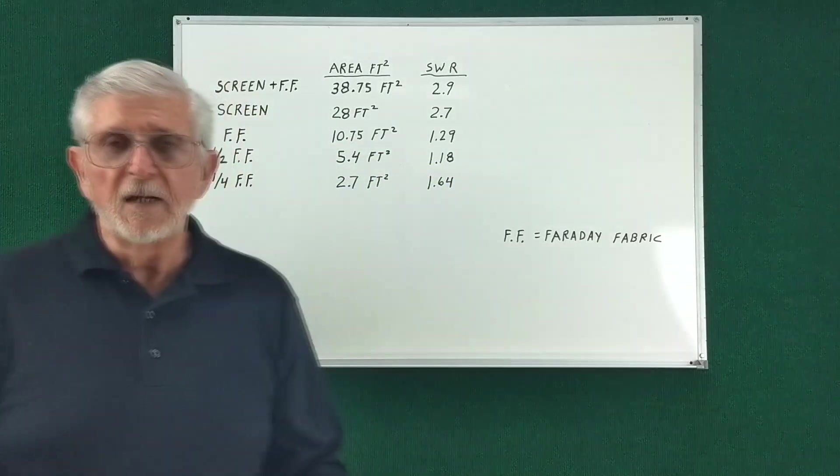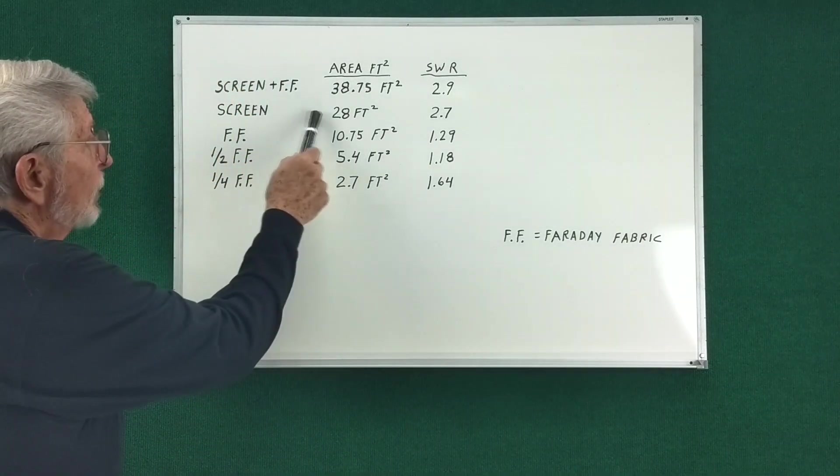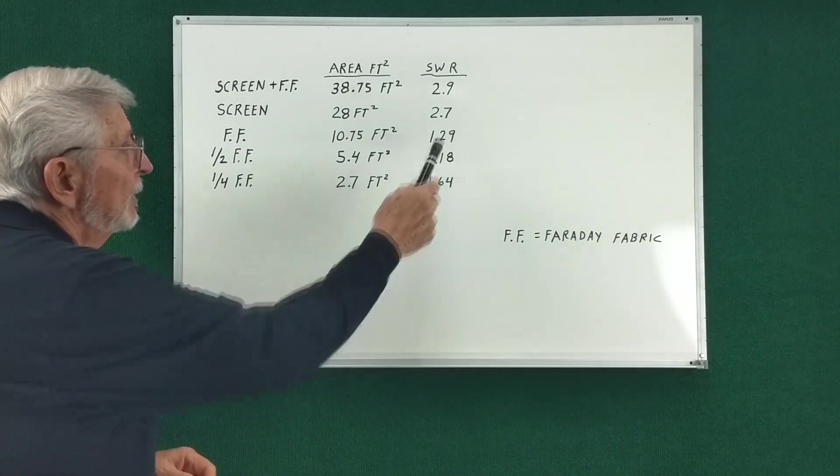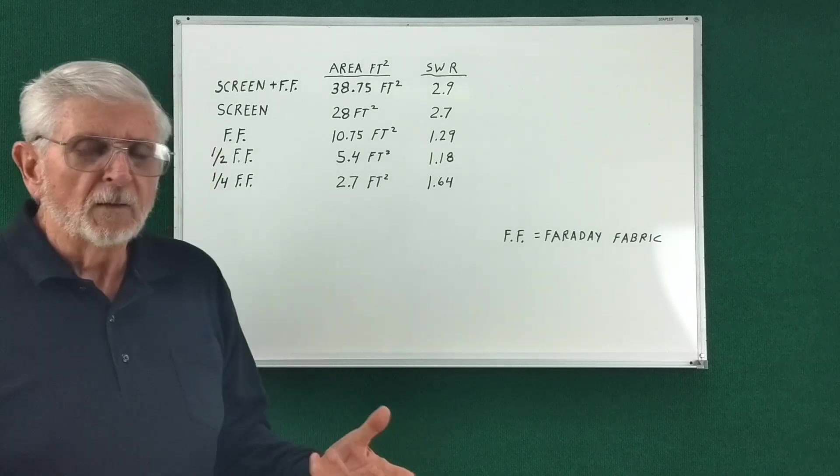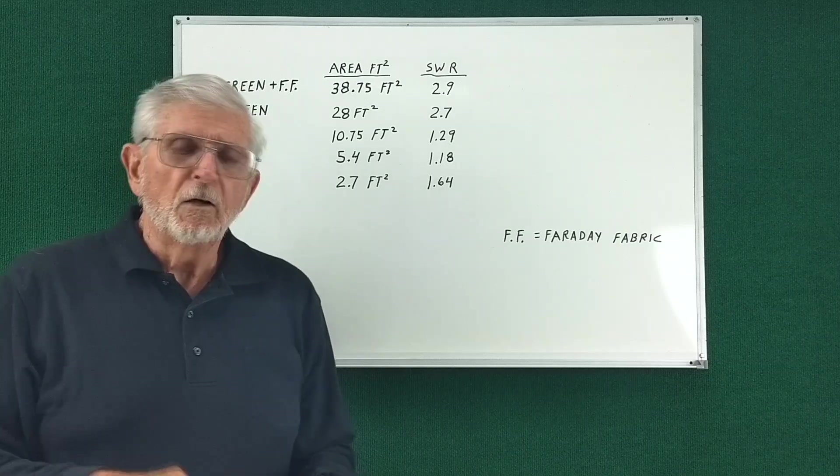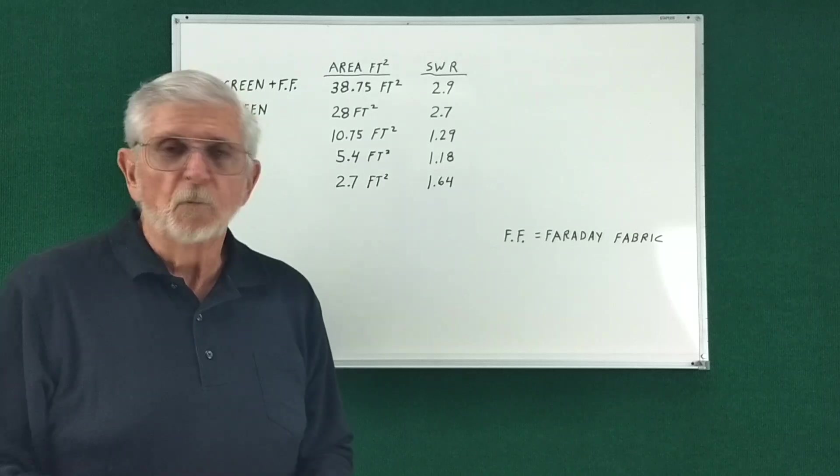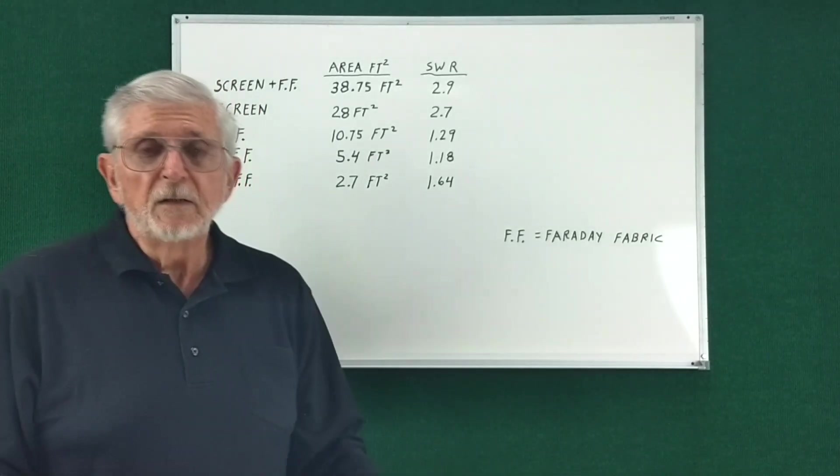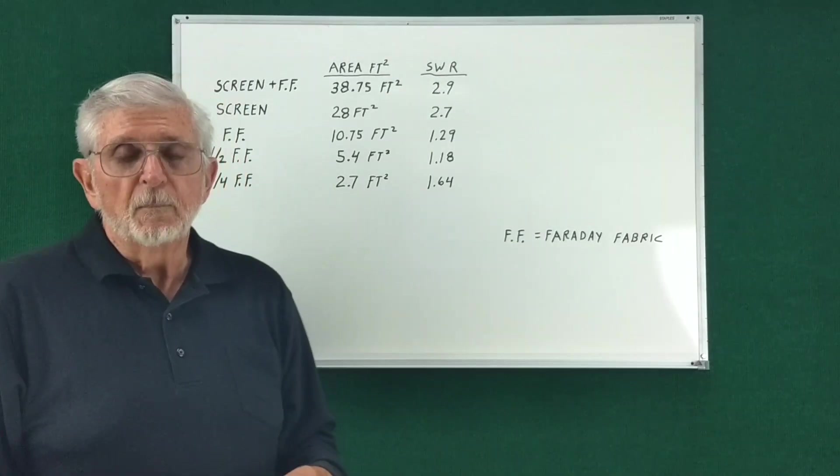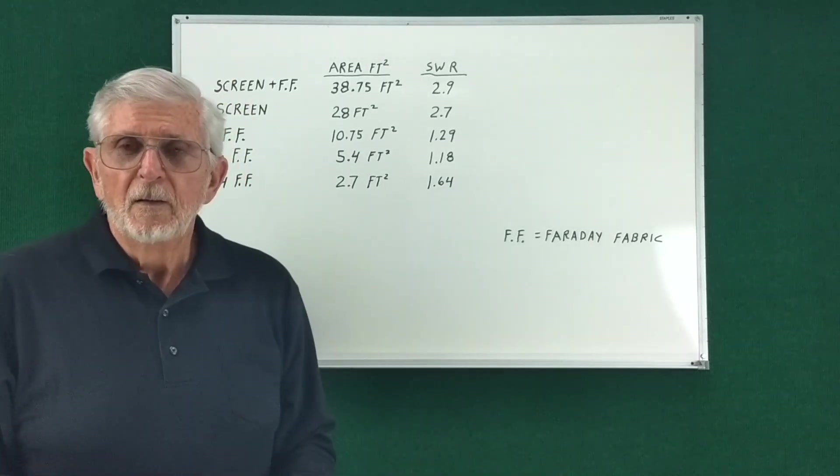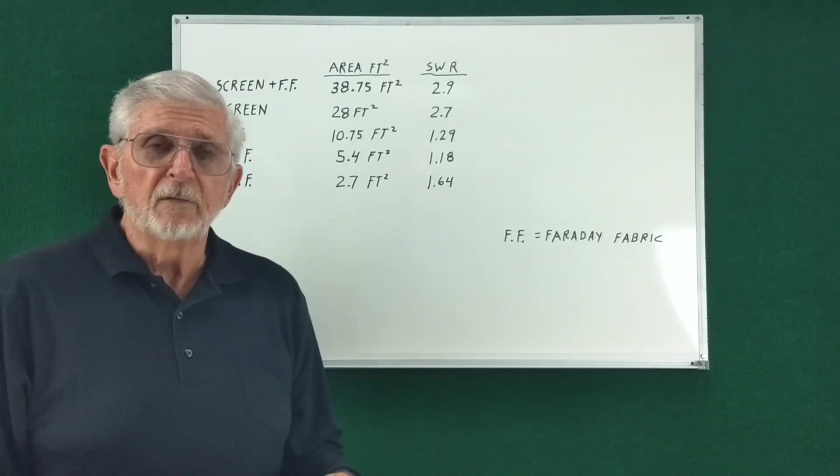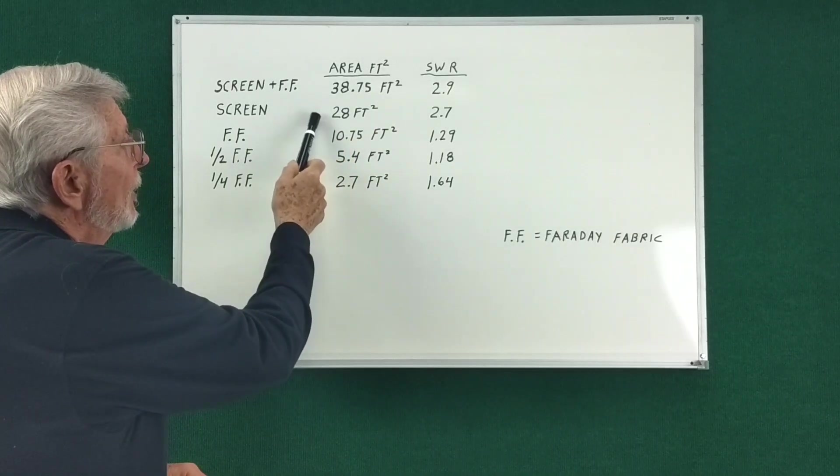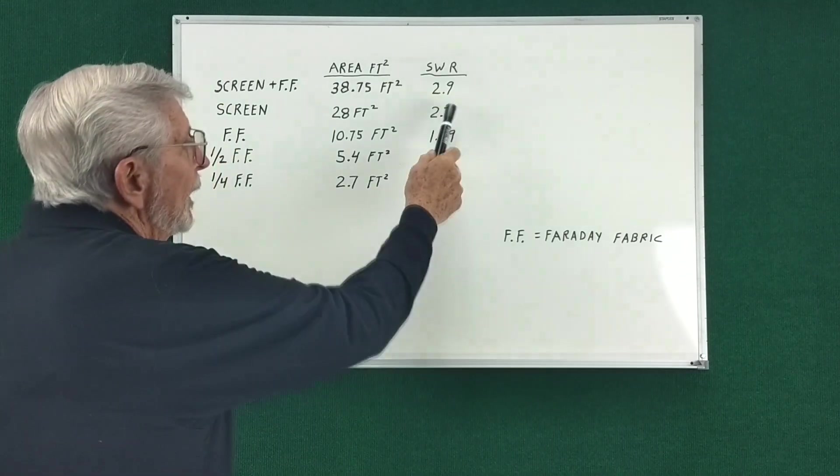Well, let's review the data that I just showed you being gathered. I started at this point here with just the window screen, and that's what worked in the past. When it didn't work and I got such a high SWR, the first thought was to have more screen area. In the video listed below, I show how the SWR was improved by more and more screen area. Many videos on YouTube suggest that the bigger the area, the better. That's what I found in the past and that's what I believed. So my first instinct was to add more area. I added a piece of Faraday fabric which increased the square footage by about 10 square feet, and the SWR got worse.